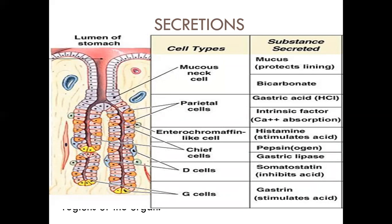In the gastric pit diagram: surface mucus cells produce mucus; mucus neck cells also produce mucus that protects the stomach lining. Parietal cells (shown in yellow) produce gastric acid (hydrochloric acid) and intrinsic factor. Intrinsic factor is required for absorption of vitamin B12, and to a lesser extent calcium. Without intrinsic factor, vitamin B12 absorption is impaired, leading to pernicious anemia.